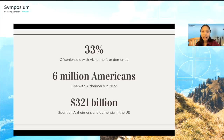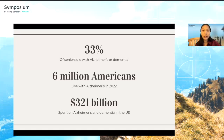One in three seniors dies from or with Alzheimer's or dementia, and that number is projected to increase as the senior population grows. Currently in 2022, 6 million Americans live with Alzheimer's, amounting to around $321 billion dollars in care costs. That cost is projected to increase to about one trillion dollars by 2050. Alzheimer's is not simply a medical condition impacting individuals — it has economic and systemic implications that could impact virtually all of us.